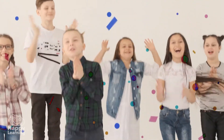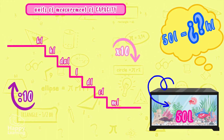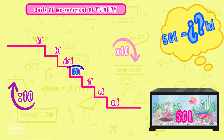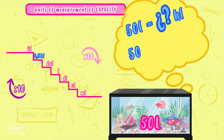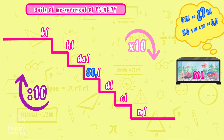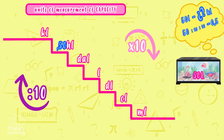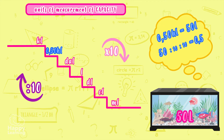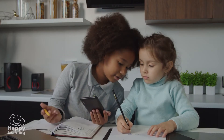Now we want to know how many hectoliters are in 50 liters. We start at the liter and go up 1 and 2 steps. So we divide 50 by 10 twice — or in other words, we move the decimal point one place for each step we go up. We move the comma once and twice, and since there's no number in front, we add a zero. We get 0.50 hectoliters, or the same as 0.5 hectoliters. The ladder trick is really easy, isn't it?